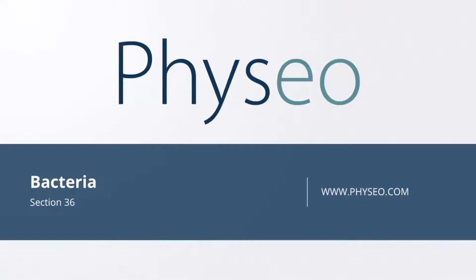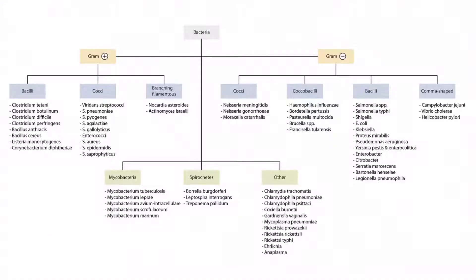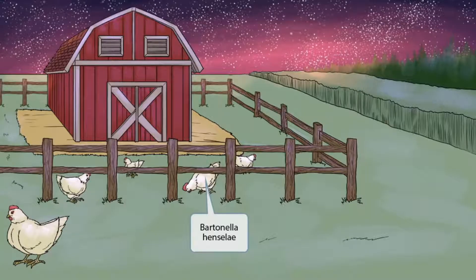Welcome to section 36 of Bacteria. This is our bacteria overview figure, and in this video we'll be discussing Bartonella henselae, which you can see right here. This scene will take place on the farm, where a bunch of hens have managed to escape. Hen sounds like henselae, so this will be our symbol for Bartonella henselae.